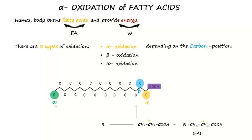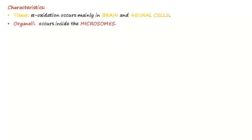Let's focus on Alpha Oxidation. Alpha Oxidation means burning the Alpha Carbon of fatty acids. The tissue where these reactions occur is brain and neural cells, specifically in microsomes, the organelle.